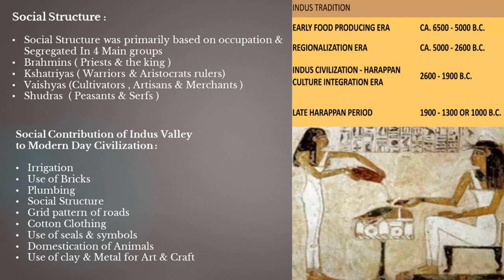Talking about the social structure of Indus Valley Civilization, it was based on occupation and segregated into four groups: Brahmins, Kshatriyas, Vaishyas, and Shudras.